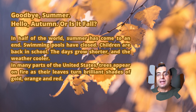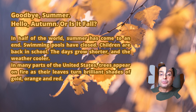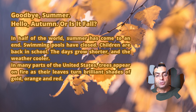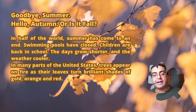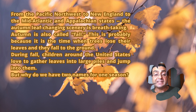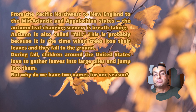Goodbye summer. Hello autumn. Or is it fall? In half of the world, summer has come to an end. Swimming pools have closed. Children are back in school. The days grow shorter and the weather cooler. In many parts of the United States, trees appear on fire as their leaves turn brilliant shades of gold, orange and red. From the Pacific Northwest to New England to the mid-Atlantic and Appalachian states, the autumn leaf-changing scenery is breathtaking.